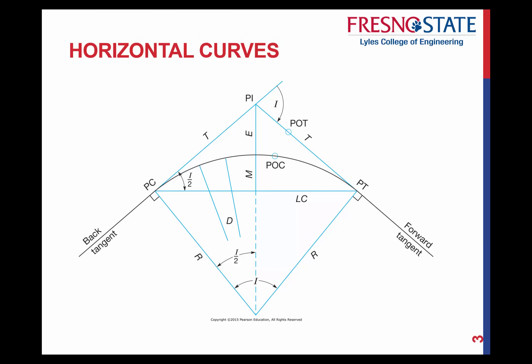Here is your typical diagram we're going to look at. This gives you all the information you're going to be using to calculate everything. The first thing I want to start with is our PI — that stands for the point of intersection. It's the point of intersection from your back tangent, where you're coming from, to your forward tangent. That creates an angle, which is your intersection angle.